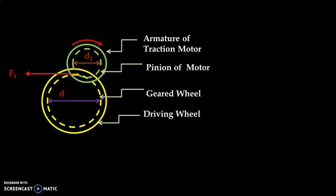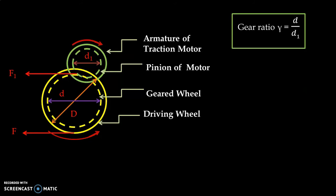F1 is the tangential force generated by the armature of the traction motor, and that force is transferred to the driving wheel. The force generated at the driving wheel is capital F. The diameter of the driving wheel is capital D. Gear ratio can be indicated as gamma, which is the ratio of d to d1.